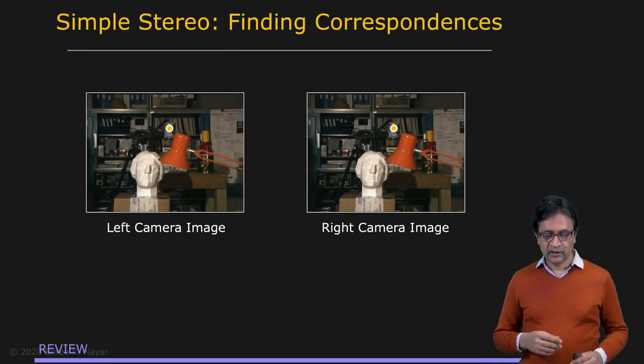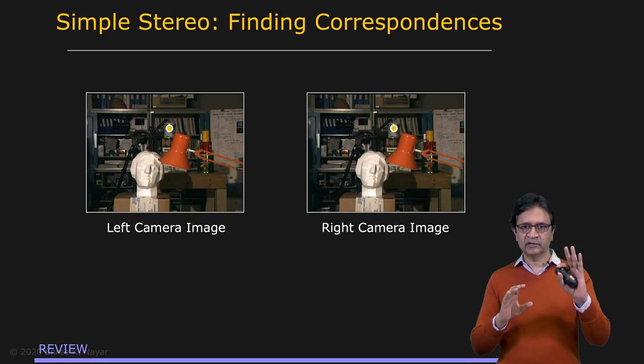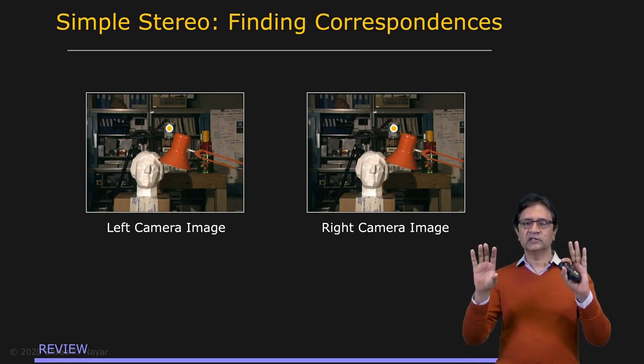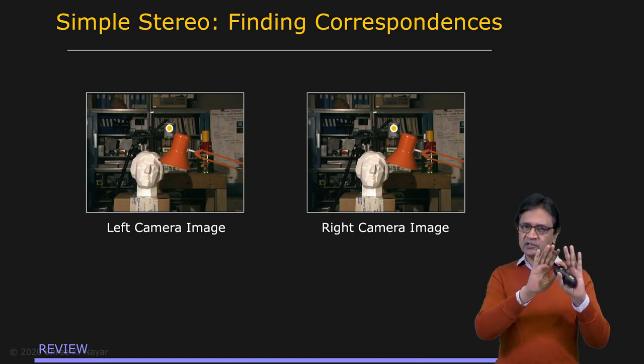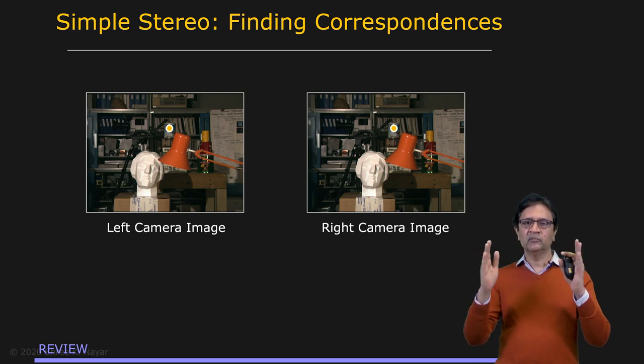Let's start with what we did in the case of simple stereo. If you remember, in simple stereo you have a left camera and a right camera. The relationship between the two is very simple. It's a very special configuration where the right camera is essentially the left camera translated along the horizontal direction by some distance b, which is the baseline.